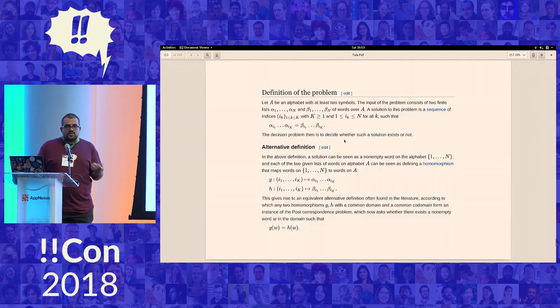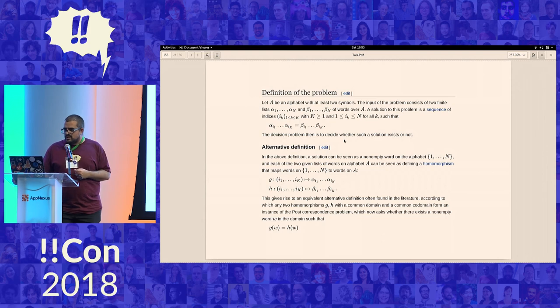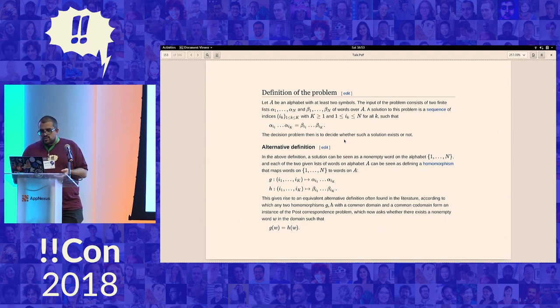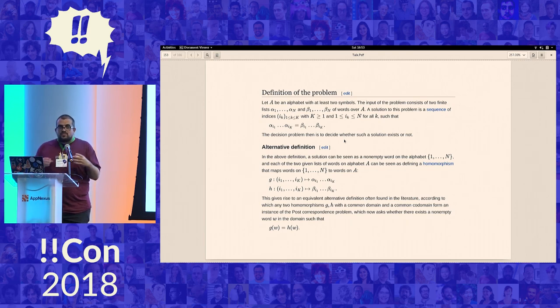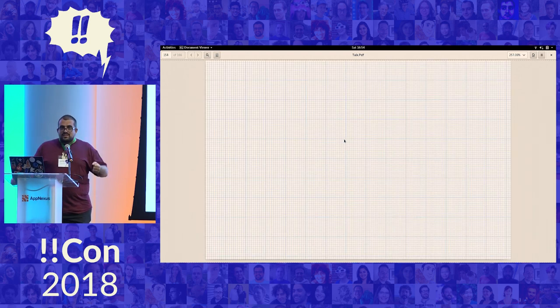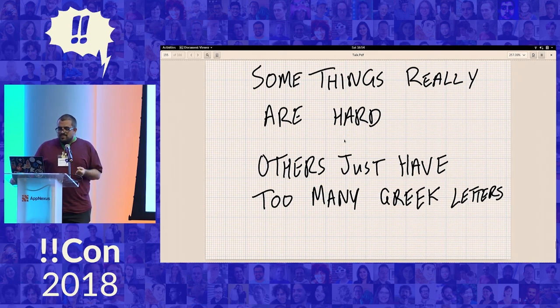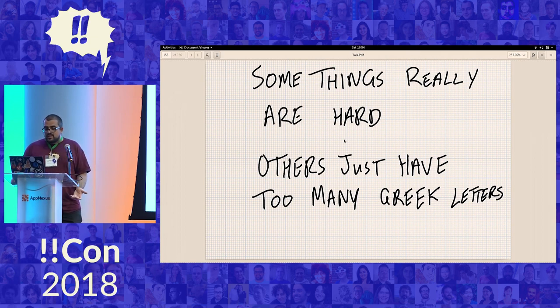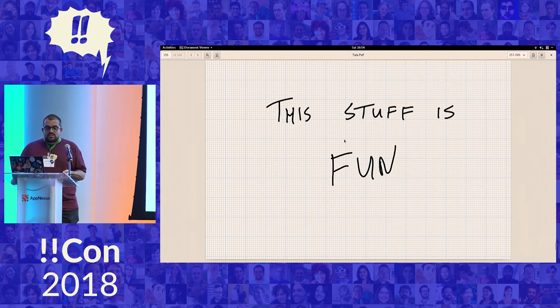And then if you go and look at Wikipedia for this, for the post correspondence problem, it's like, let A be an alphabet with at least two symbols. The input of the problem consists of two finite lists, alpha one, blah blah. Well, if you don't like that definition, let's go with this one. The two given lists of the words of the alphabet can be seen as defining a homomorphism that maps one to N to words on A and G blah, blah, blah. This is just the description of the tile. This has got nothing to even do with the correspondence to the Turing machines. This is just like, here's what the problem is. And so some of these things can be really kind of mystifying. And sometimes they actually are hard, but other times they just have too many Greek letters. And I think it's really cool to know that some of these things are actually approachable and some of these things are really fun.